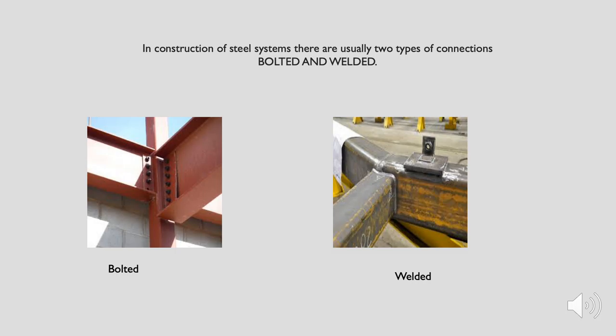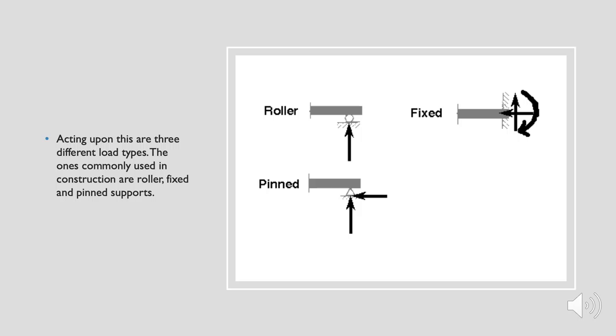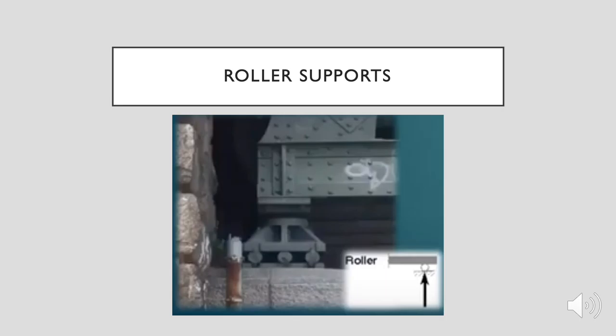The type of support utilised indicates what load can be upheld or resisted and decides the load-bearing limit of every member. Three different load types act upon structures. The ones commonly used in construction are roller, fixed, and pin supports.